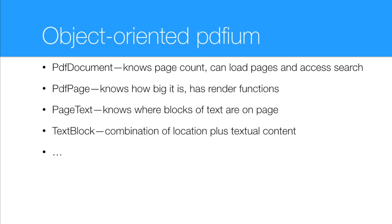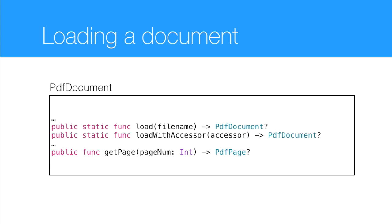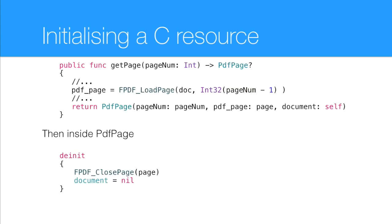Swift actually made this relatively painless for us. The PDF document wrapper has a couple of factory methods — static functions where we pass in a Swift type such as a file name or a custom data accessor, and it returns a PDF object. Once we have an instance, we can request a page, which returns a page object wrapping one of those PDFEM page handles. That get-page function grabs the handle and creates a new wrapper object. We use the deinit method to clean up the C resource, meaning we rely on Swift reference counting to automatically clean up our C resources when the PDF page is no longer in use.